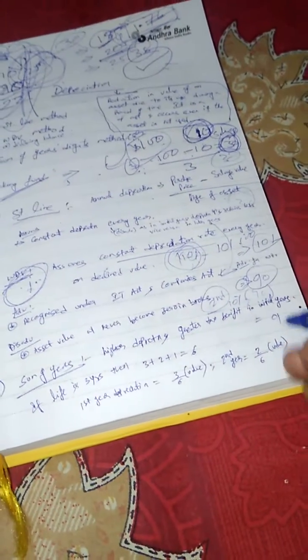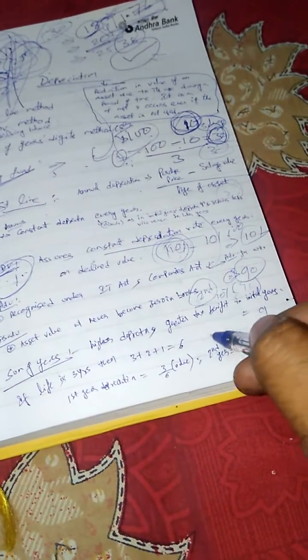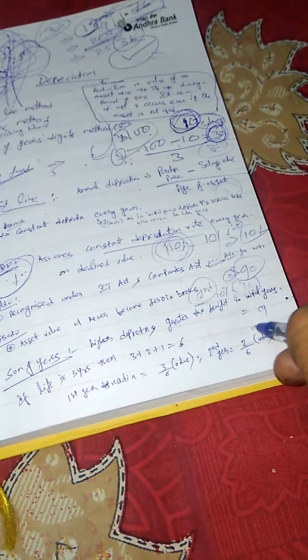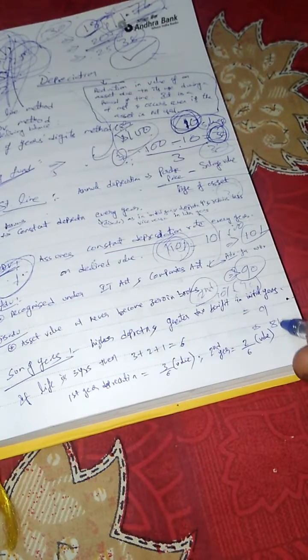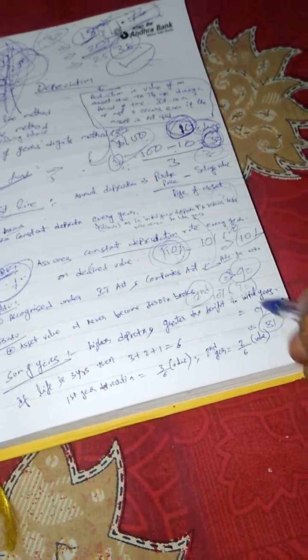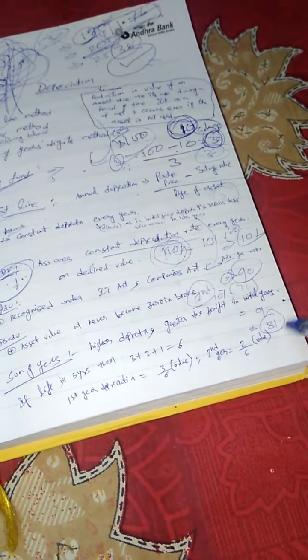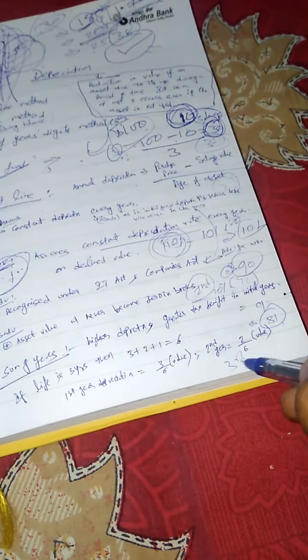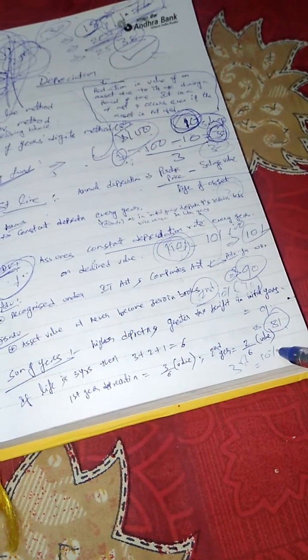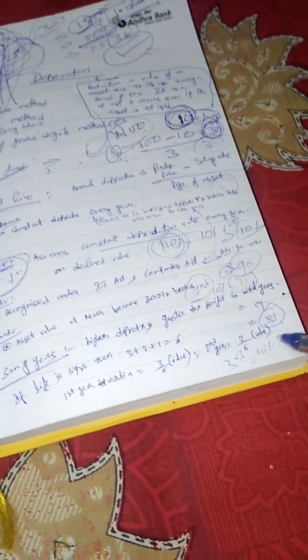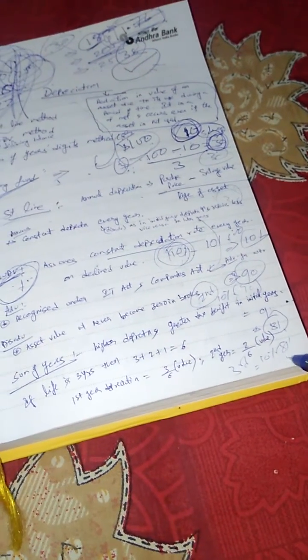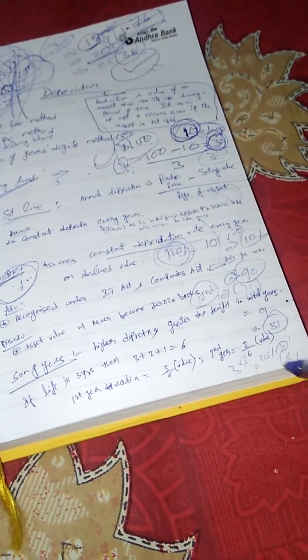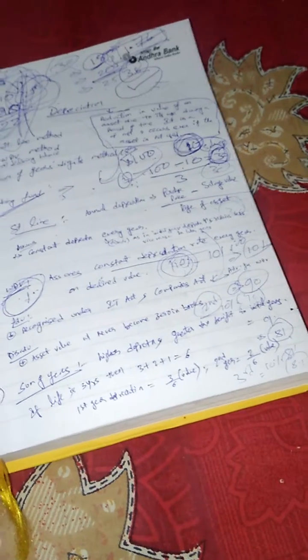So it will be 9. Now the asset value, residual value is 81 — 90 minus 9, 81. Now in the third year, depreciation will be 10% of 81, which is 8.1, and so on.